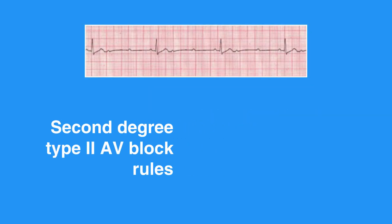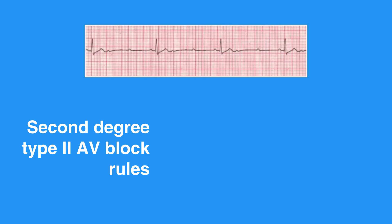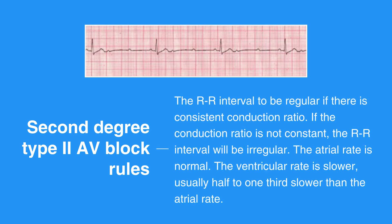Second degree type II AV block, or Mobitz II, rules include the RR interval to be regular if there is a consistent conduction ratio. If the conduction ratio is not constant, the RR interval will be irregular. The atrial rate is normal. The ventricular rate is slower, usually half to one-third slower than the atrial rate.